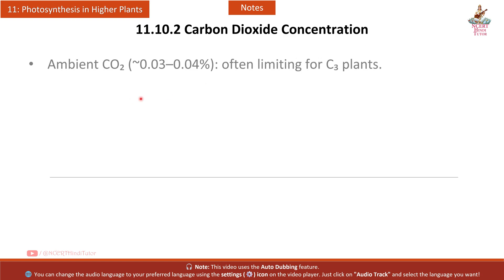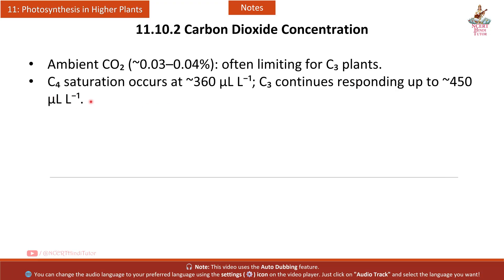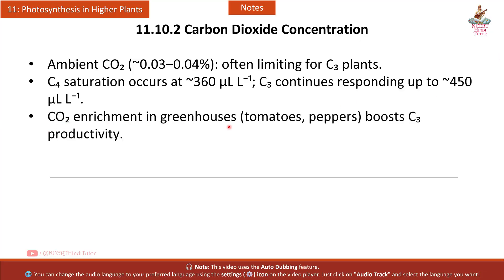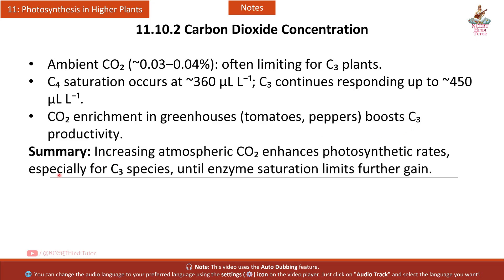Section 11.10.2 Carbon dioxide concentration: ambient CO2 (approximately 0.03–0.04%) is often limiting for C3 plants. C4 plants saturate at approximately 360 ppm; C3 plants continue responding up to approximately 450 ppm. CO2 enrichment in greenhouses boosts C3 productivity in crops like tomatoes and peppers. Increasing atmospheric CO2 enhances photosynthetic rates, especially for C3 species, until enzyme saturation limits further gain.